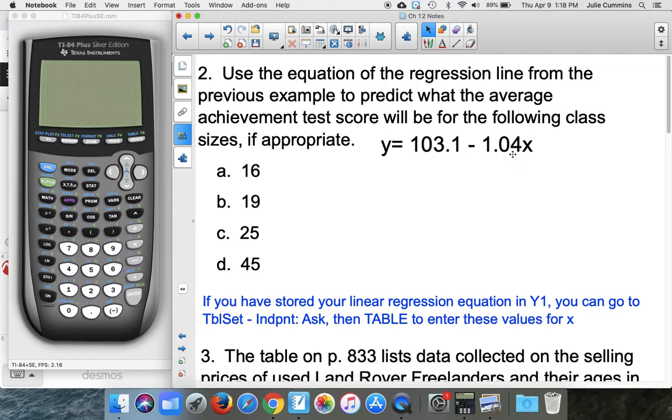But the slope does have some interesting interpretations. This is basically saying for every additional person we put in class, you can expect the score to go down one point. So that's kind of significant.